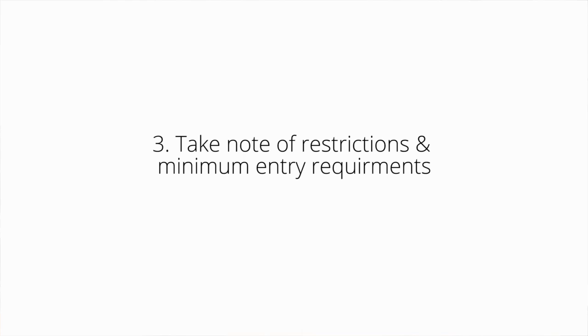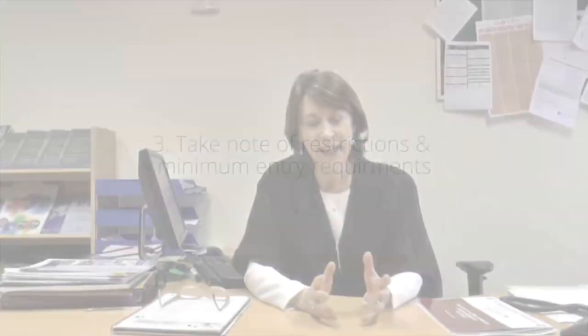The third common mistake that people make would be not taking note of restrictions and minimum entry requirements. This is quite serious. A lot of courses have minimum entry requirements. For example, if you are doing a Level 8 Engineering course you need to have a C3 in Honours Maths. If you are doing Veterinary Medicine you need to have a C3 in Chemistry. If you are doing Pass Maths and you want to go to UCD to do Science or Commerce, you must have a B3 on the Pass Maths paper. If you get 600 or 625 points and you do not meet that entry requirement, your points are in effect zero.